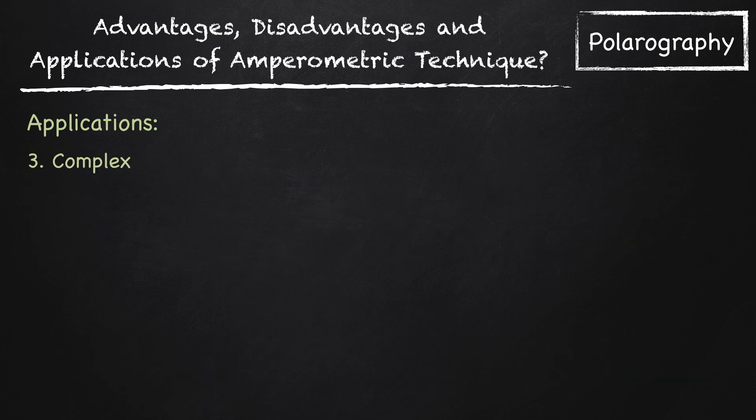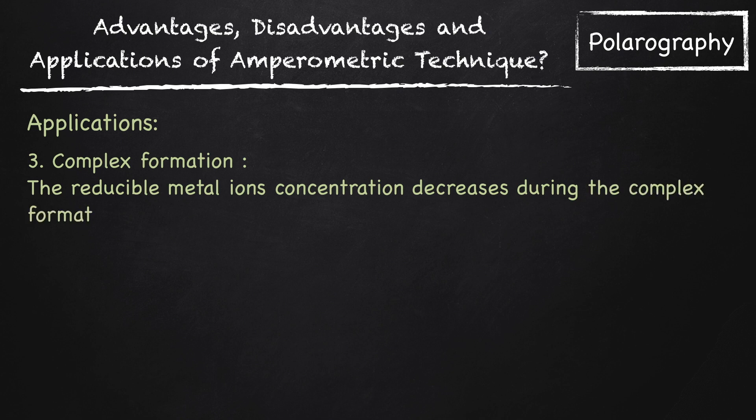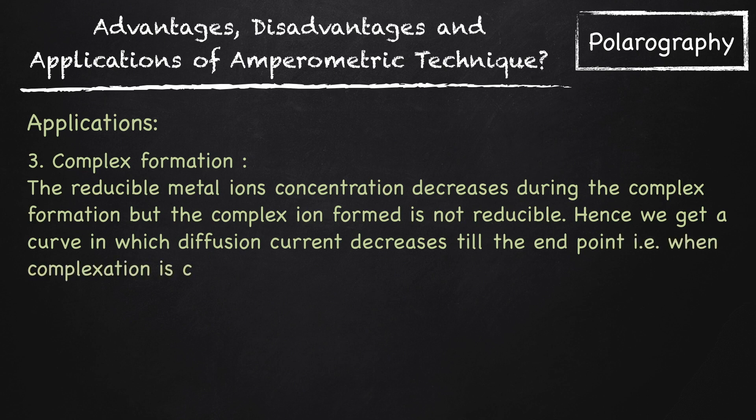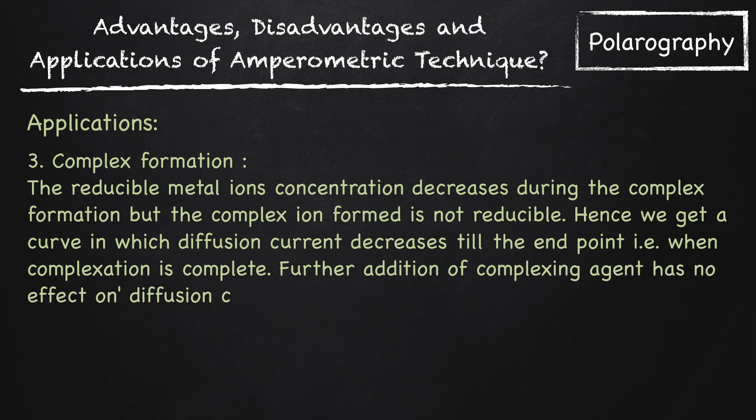Third, complex formation reactions. The reducible metal ions concentration decreases during the complex formation because the complex ion formed is not reducible. Hence, we get a curve in which diffusion current decreases till the end point i.e. when complexation is complete. Further, addition of complexing agent has no effect on diffusion current i.e. diffusion current is constant.